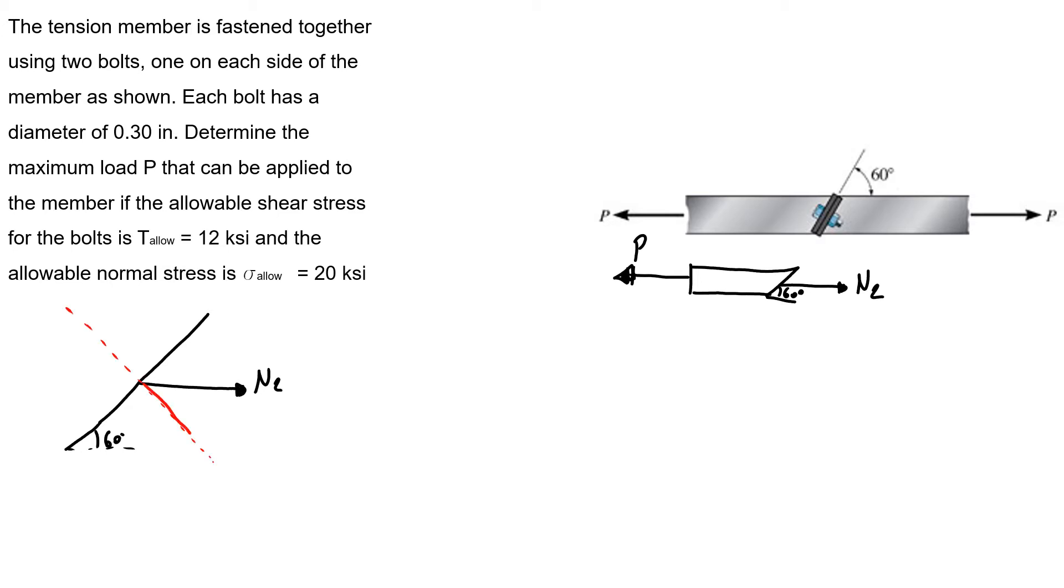That will be here that we'll call N1, and here will be our shear that we'll call V1. So here is 60, so here is 30 degrees.